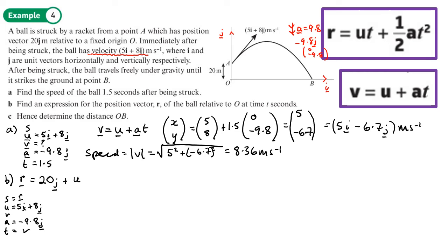So 20j initial position plus its displacement, which is ut plus half at squared. Now we can just plug those in. 20j plus ut, that's 5i plus 8j times t, plus half and a which is negative 9.8 j times t squared.